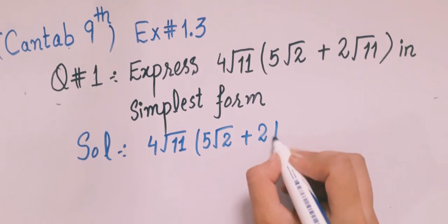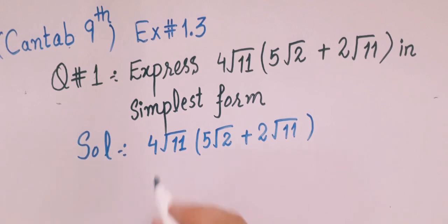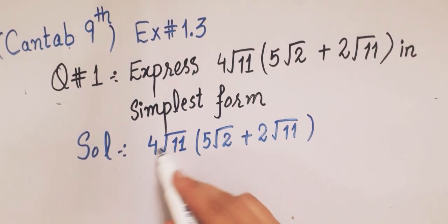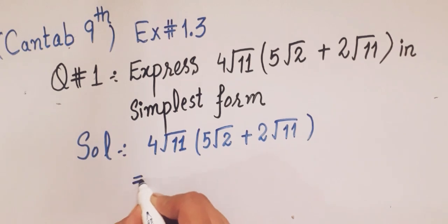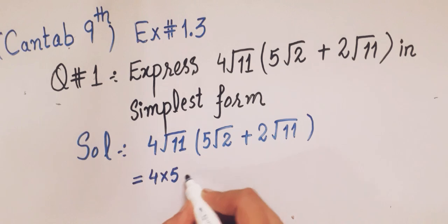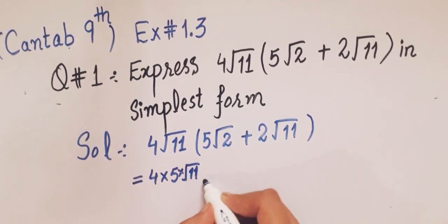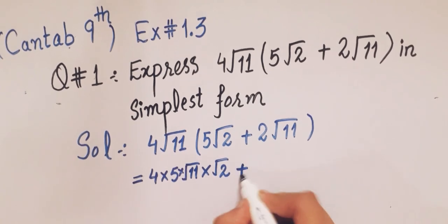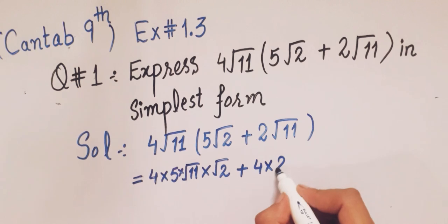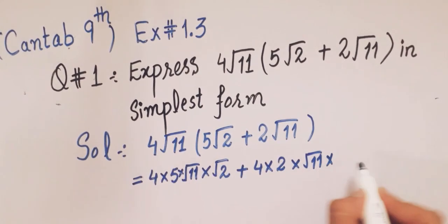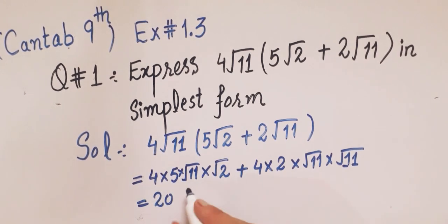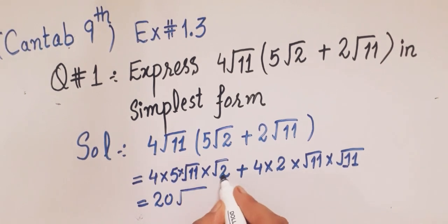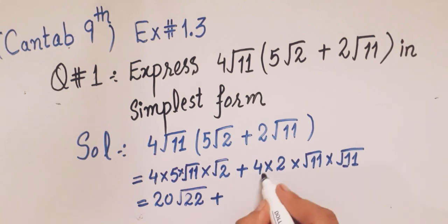4 square root 11 into 5 square root 2 plus 2 square root 11. Now we multiply: 4 by 5 and square root 11 by square root 2, then 4 by 2 and square root 11 by square root 11. So 4 multiplied by 5 is 20, and square root 11 multiplied by square root 2 gives square root 22. Then 4 multiplied by 2 is 8, and square root 11 multiplied by square root 11 is 11.